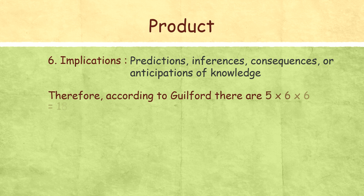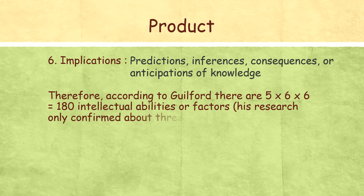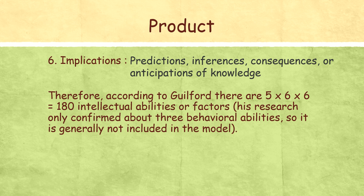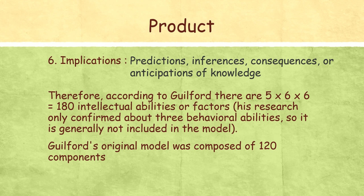And therefore, according to Guilford, there are 5 x 6 x 6 = 180 intellectual abilities. In this video, we discuss about 150, five into five into six. But in the basic model, Guilford's original model has 120 components.